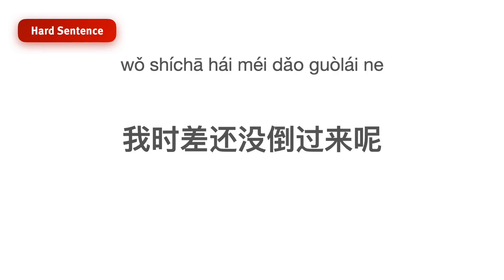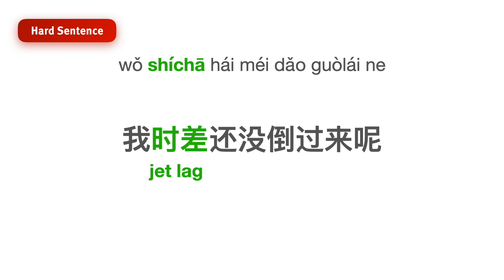So first, tell me what this sentence means. There might be some words that are unfamiliar to you. For example, 时差 means jet lag — the difference in time is jet lag. And 倒 means to reverse something. But putting everything together: 我时差还没倒过来呢 — what does this mean? Can you figure it out?